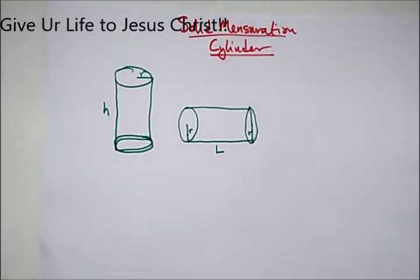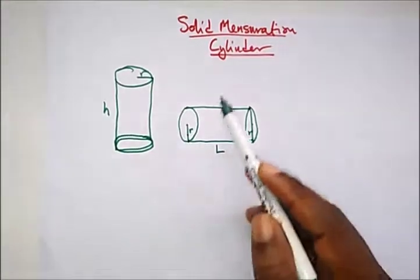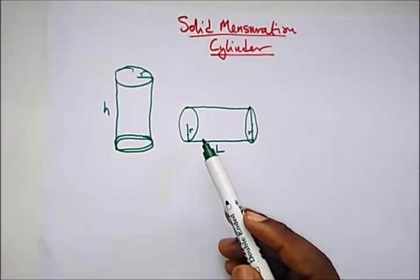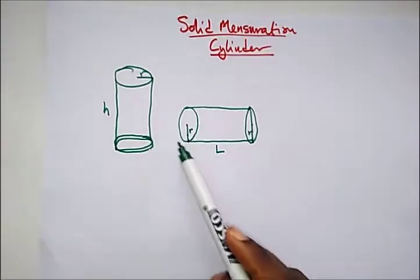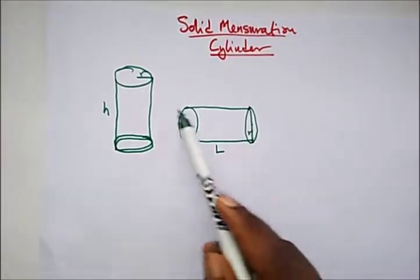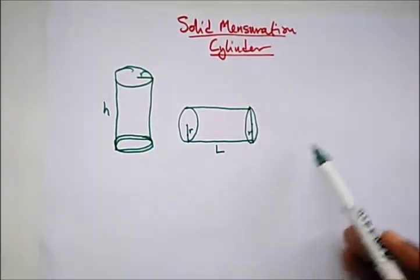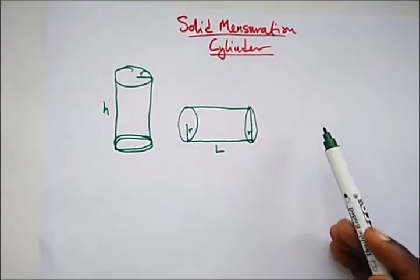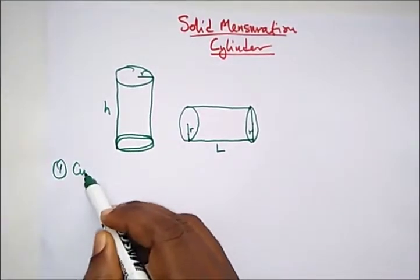Okay, so the three properties of a cylinder - what we always try to find out about the cylinder is the curved surface area of the cylinder, the total surface area (that's the area of the top of the cylinder, the bottom of the cylinder and its side), and also the volume of the cylinder, what the cylinder can contain. So number one, our curved surface area.